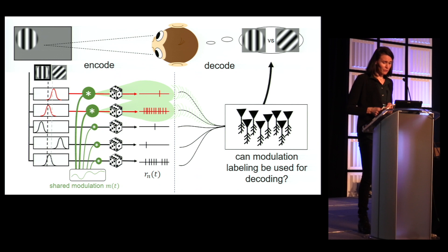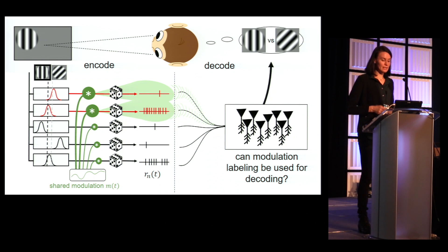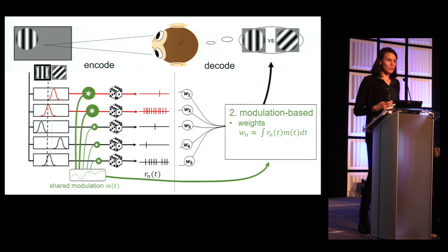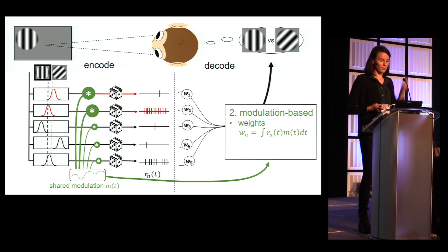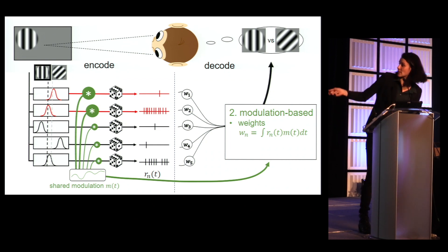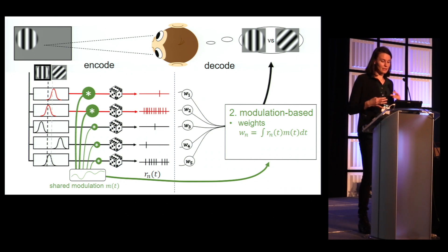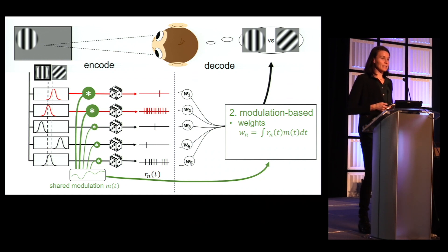We want to focus on decoding and whether this modulation labeling can be used for decoding. Specifically, we propose that this stochastic noise-inducing modulation could guide a naive decoder towards the informative cells. We formulate a heuristic modulation-based decoder that does not know anything about the encoding population, but it does know the shared modulation. It will compare the neurons' responses and the modulation to set the decoding weights accordingly — specifically, setting the decoding weights proportional to the inner product of the response and the modulation.